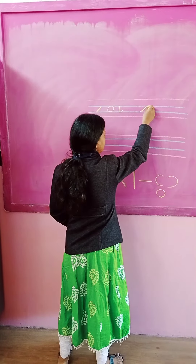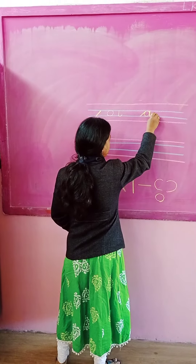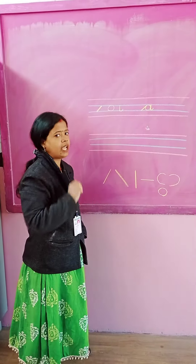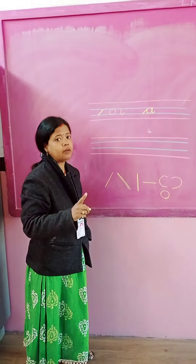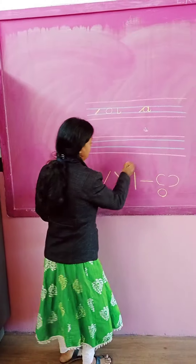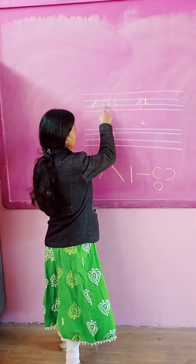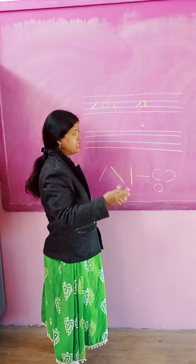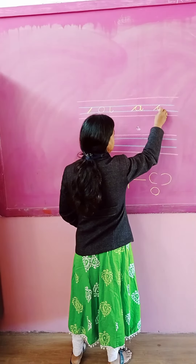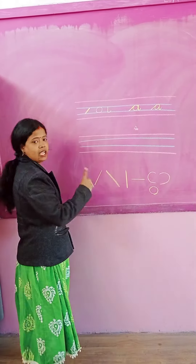Slanting line, O, and straight line with curve — this is 'a'. When we write cursive, we don't lift the pencil. But children, you are just learning now, so step by step you will lift the pencil as you learn. So what I have done: slanting line, circle, and straight line with curve — in this way, write 'a'.